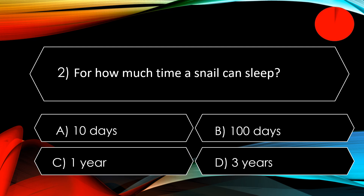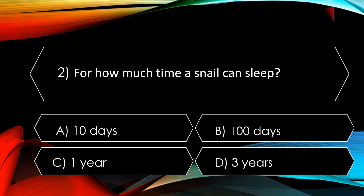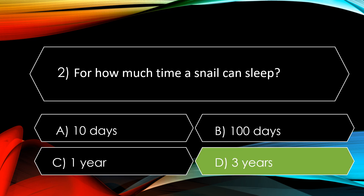The next question: for how long can a snail sleep? The options are A. 10 days, B. 100 days, C. One year, and D. Three years. The correct option is D. Three years — a snail can sleep for three years in winter. This stage is called hibernation.